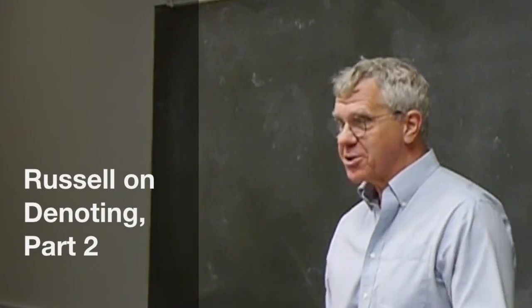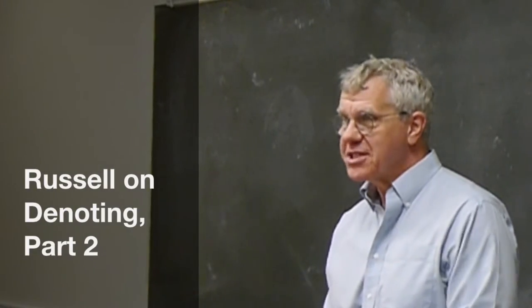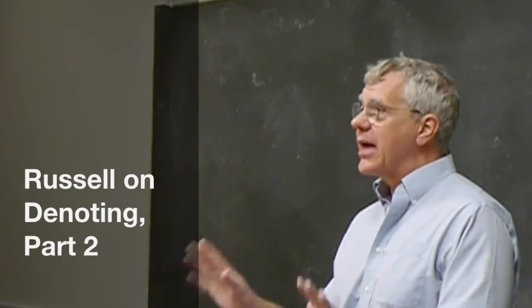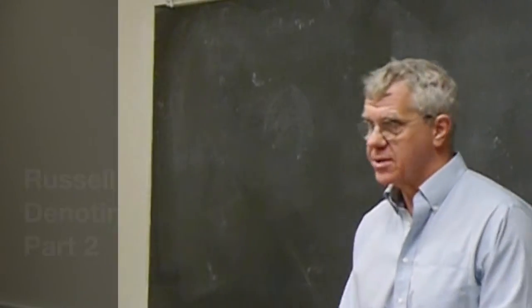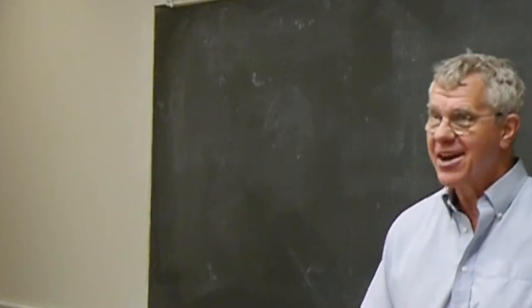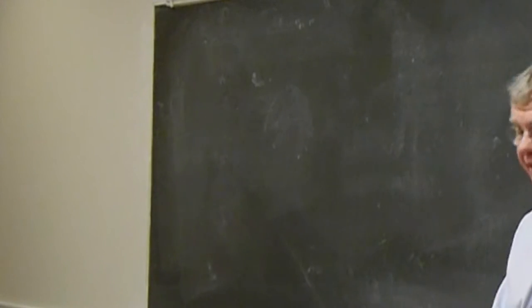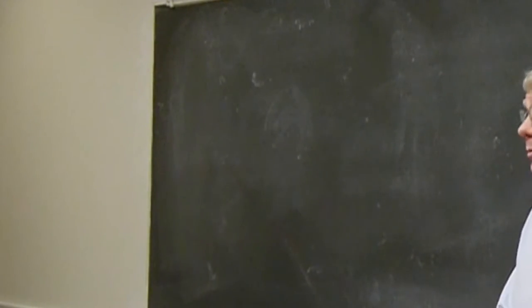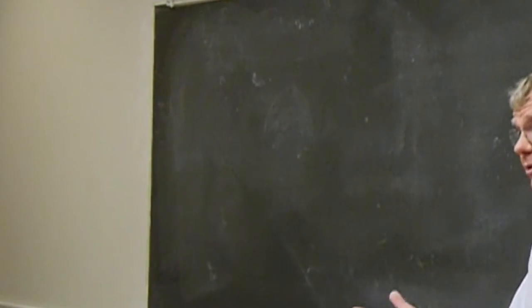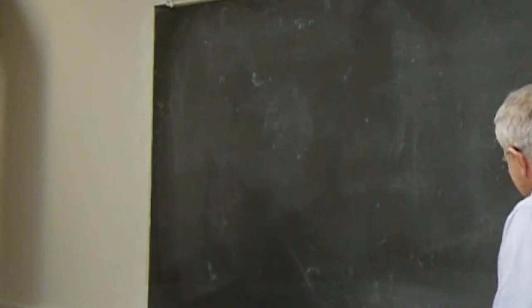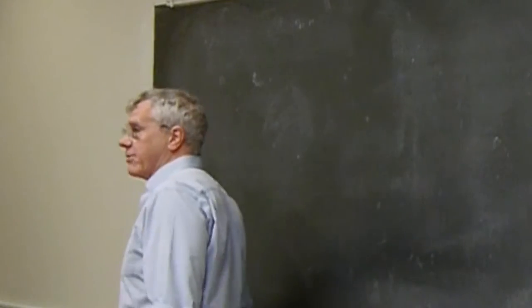I want to return to Russell's theory of descriptions. Let's remind ourselves of what it is, and then we'll look at the puzzles that Russell lays out that he thinks establish his theory and show you that it's preferable to Frege's theory. Show you essentially that it solves these puzzles that otherwise might be problematic. So let's begin with the general outline of Russell's theory.